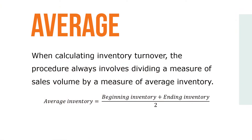When calculating inventory turnover, the procedure always involves dividing a measure of sales volume by a measure of average inventory. This average inventory is commonly found by adding the beginning and ending inventories of the operating period and dividing by two, like you see here.